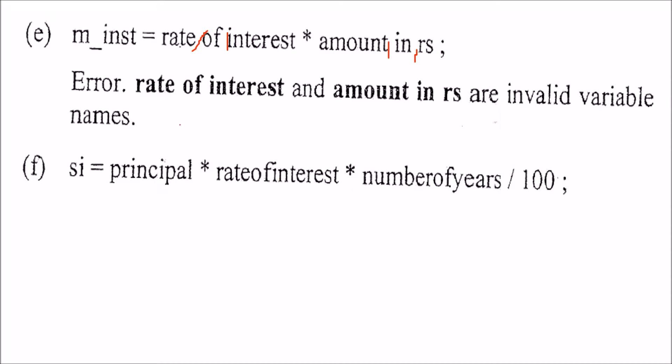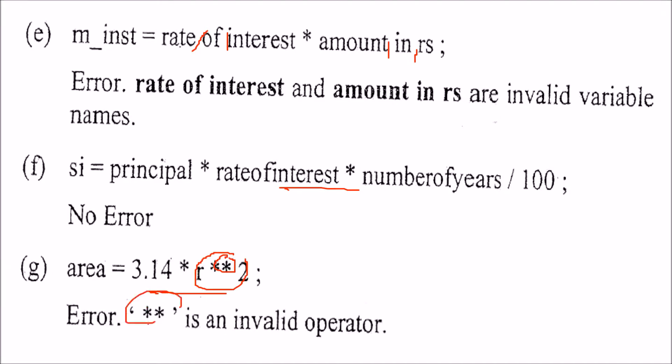Compiler will only understand this if you have proper operators. Here what is the problem? There are spaces. There are spaces in between blank spaces. Here is there any problem? We cannot see any problem. Everything is fine. Here, this one, double star. This is not available. So this is an invalid operator.